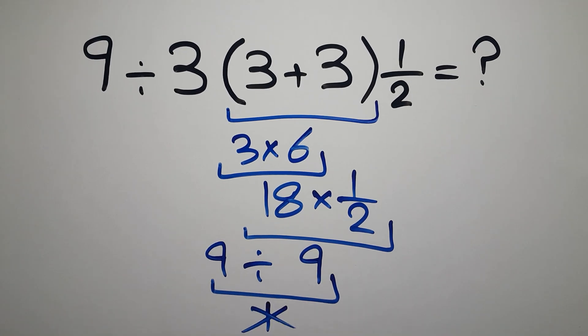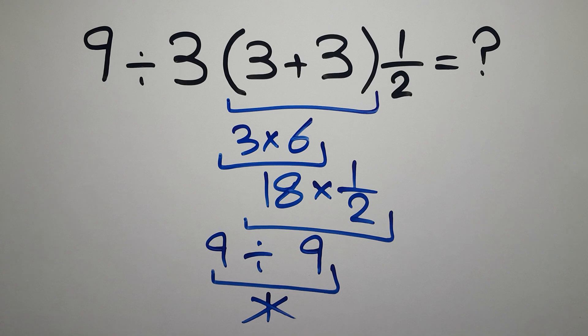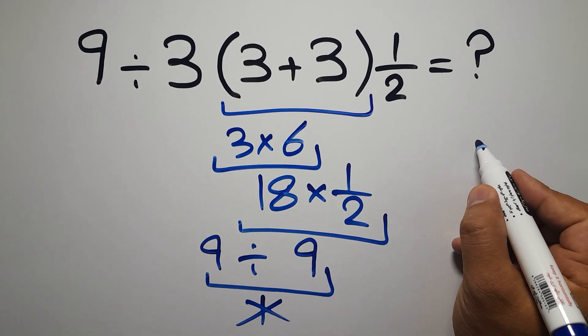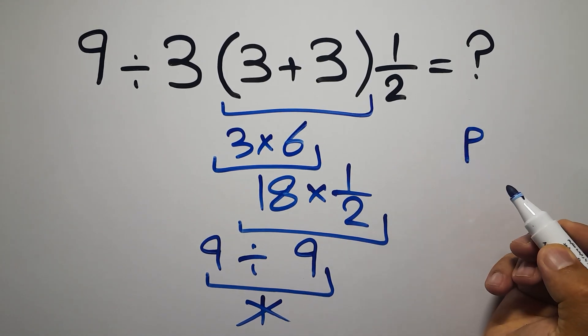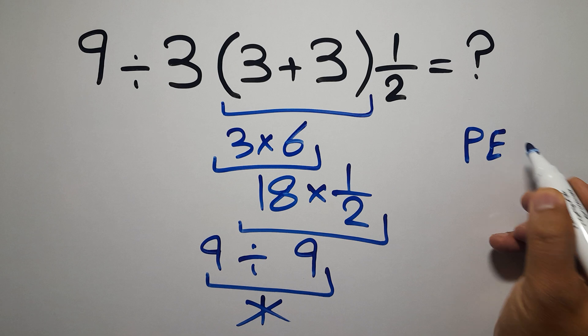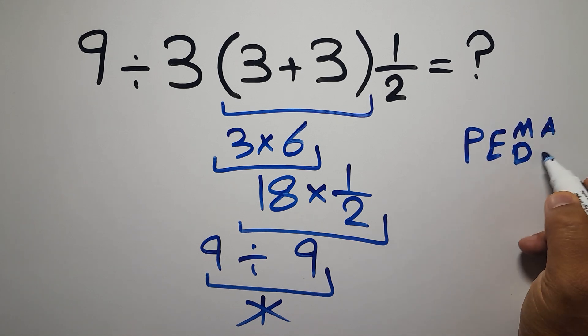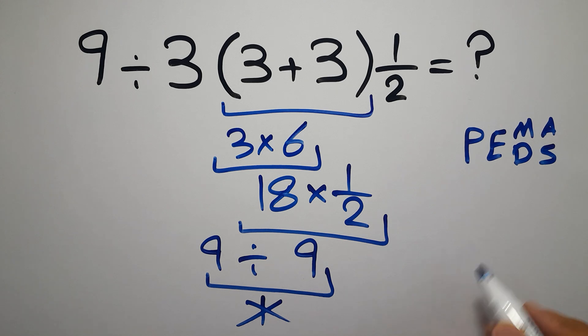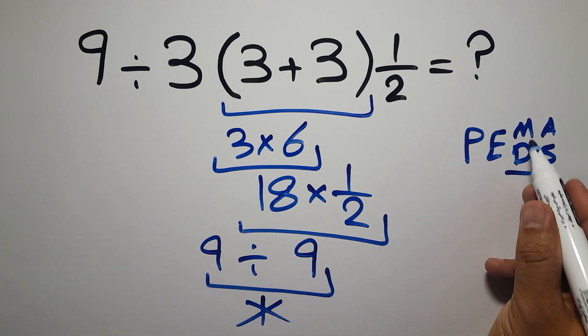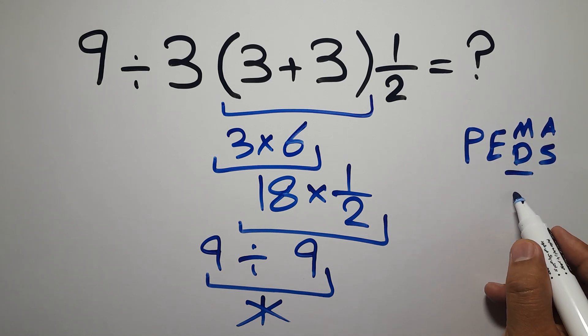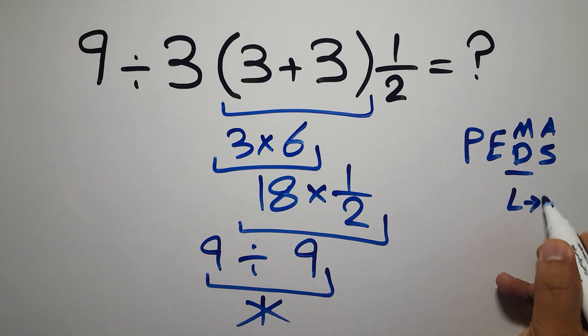But this answer is not correct, because according to the order of operations, first we have to do parentheses, then exponents, then multiplication or division, and finally addition or subtraction. Remember that multiplication and division have equal priority, and we have to go from left to right,